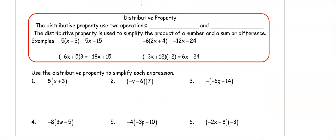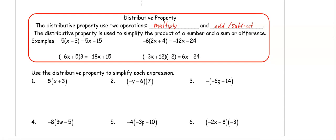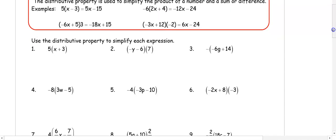In the distributive property we use two operations: multiply, and then either add or subtract based on the sign. In number 1, we have 5(x plus 3), so distributing the 5 gives 5 times x which is 5x and 5 times 3 which is plus 15.